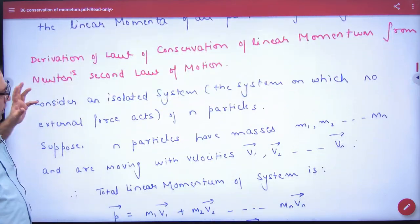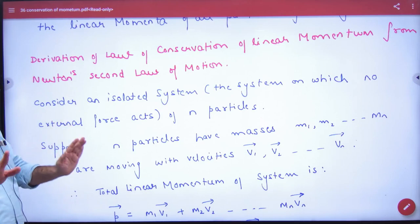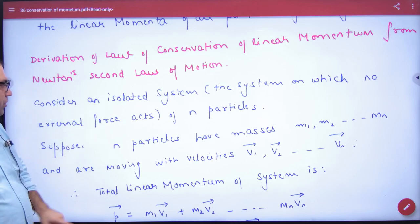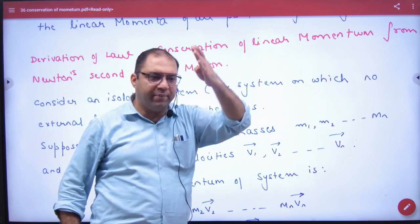And what will you write in the derivation? It will be like this. Consider that there are n number of particles in our system. There are no external force acting on which. The mass of particles are m1, m2, m3 up to mn.